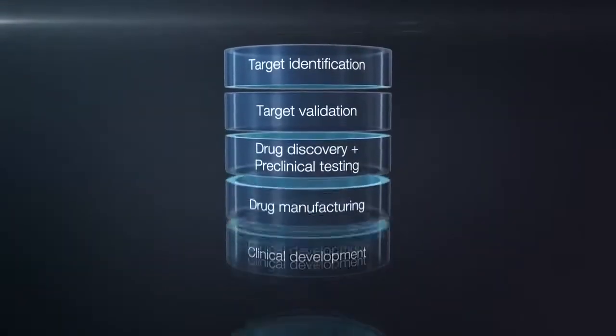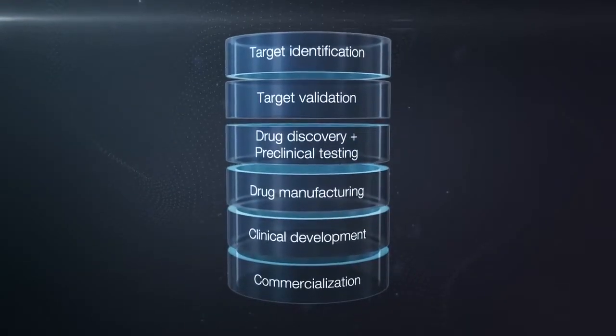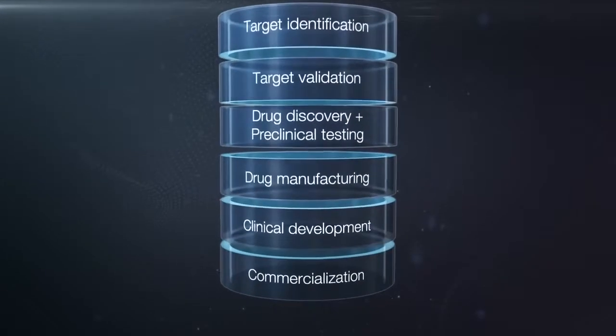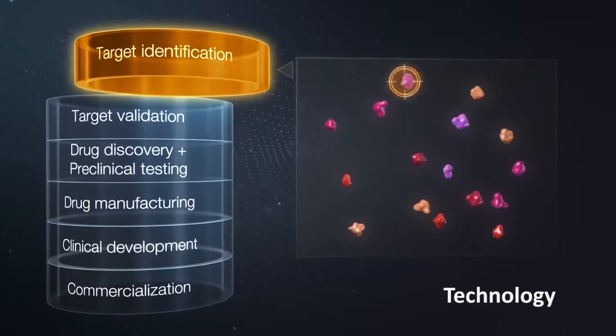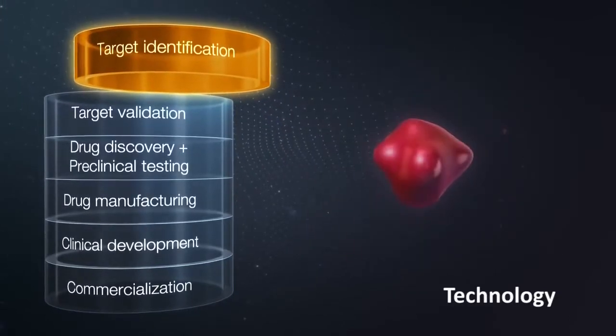The traditional drug discovery and development pathway is divided into several distinct steps. The first step is finding a target or molecule that can be linked to the onset and progression of a specific disease.